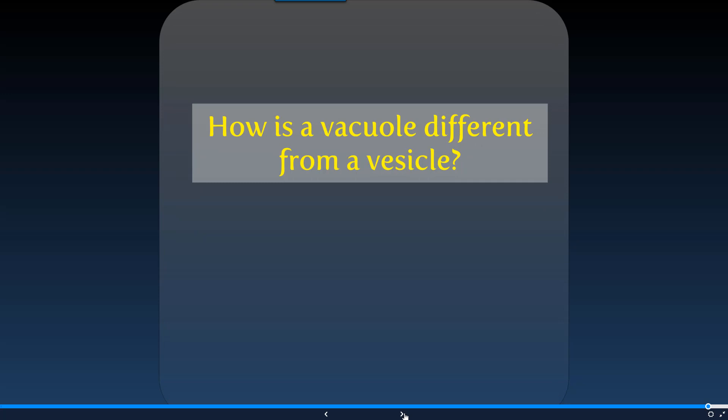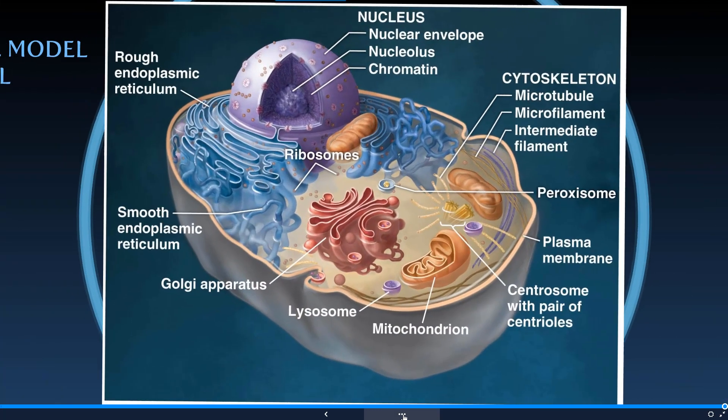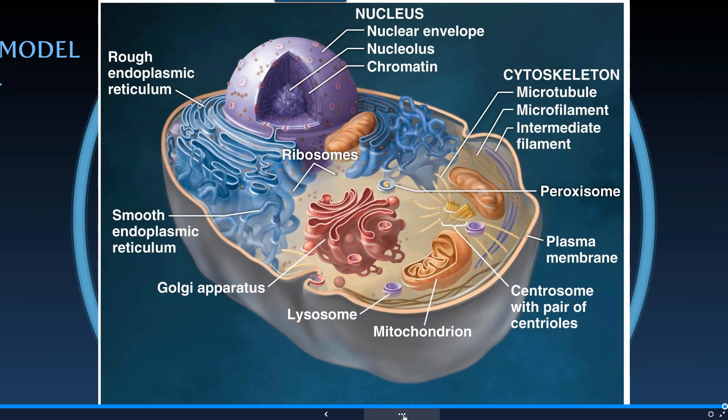How is a vacuole different from a vesicle? If you said that a vesicle is used for transporting things from one area to another, while a vacuole is used more for food or water storage, then you would be correct. And that gives us a brief tour of the organelles found within the cell.